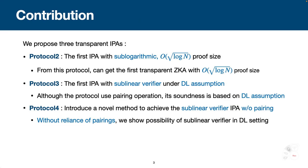This is our contribution. We propose three transparent Inner Product Arguments. First, named Protocol 2, the first Inner Product Argument with sub-logarithmic proof size of square root of log N.